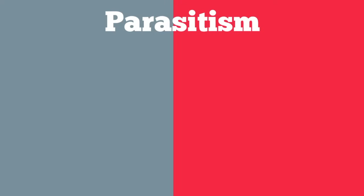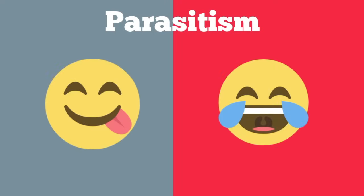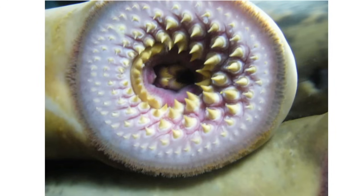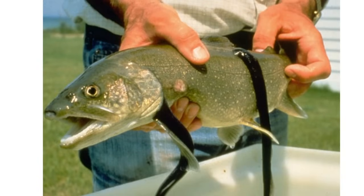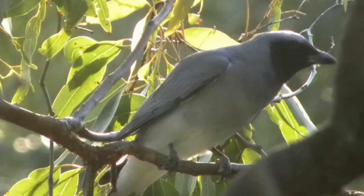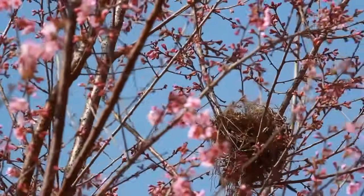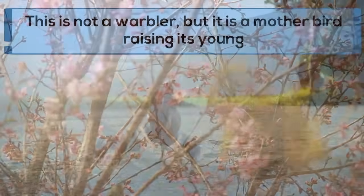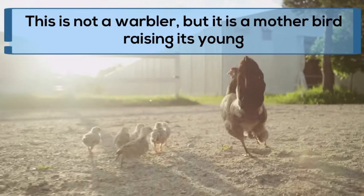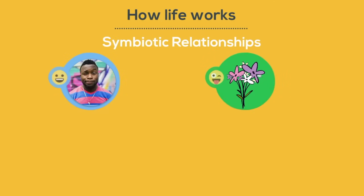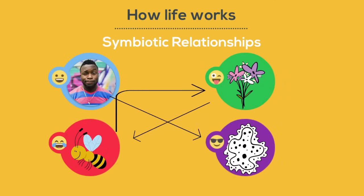Finally, we have parasitism — one benefits, yet the other is harmed. Lampreys, which are strange-looking primitive fish, have a very limited digestive system. They attach and feed on the body of other fish with more advanced digestive systems, and many times it will lead to the death of the host fish. A cuckoo, which is a bird, lays its eggs in a warbler's nest. The cuckoo young will knock the warbler's eggs out of the nest when born, and then the warbler will raise the cuckoo's young. So there we go — a look at some types of symbiosis and symbiotic relationships.